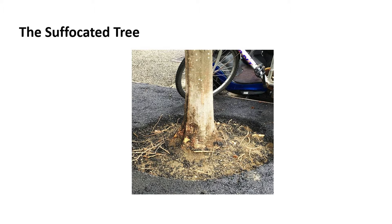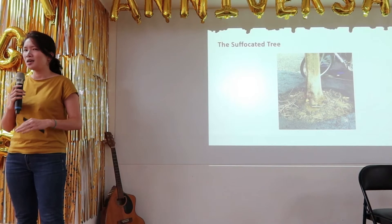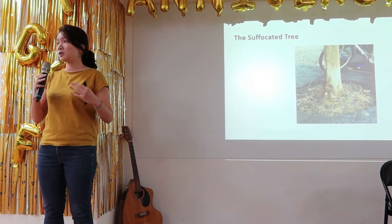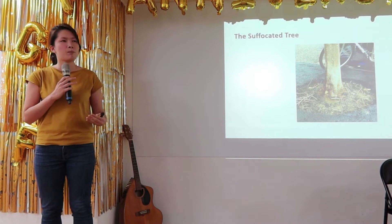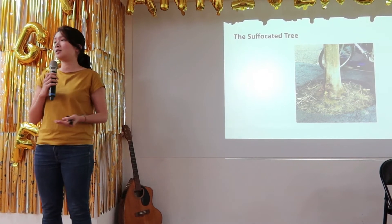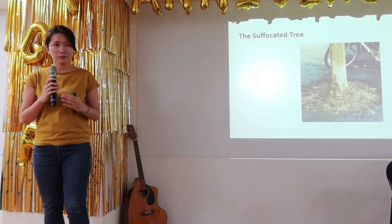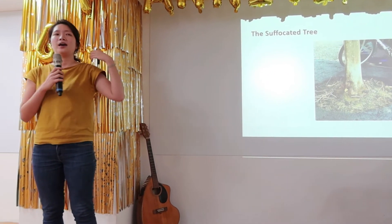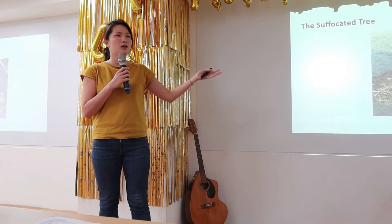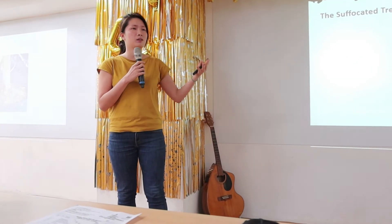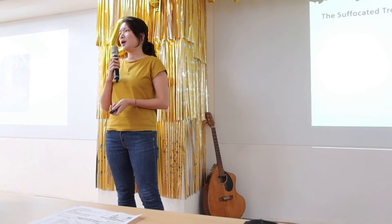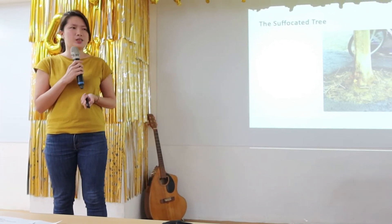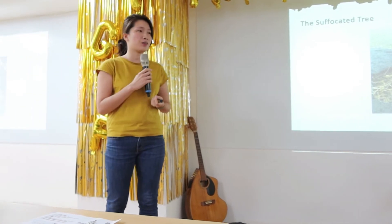The third mistake: the suffocated trees. A lot of times we know we need to leave space for the trees above, but we forget they also need space below. As a tree grows taller and bigger, it also needs space for its roots to grow and to grab more soil so it can stand better. Even though these trees grow tall and big above, if a typhoon ever comes, it's also quite easy for them to fall.